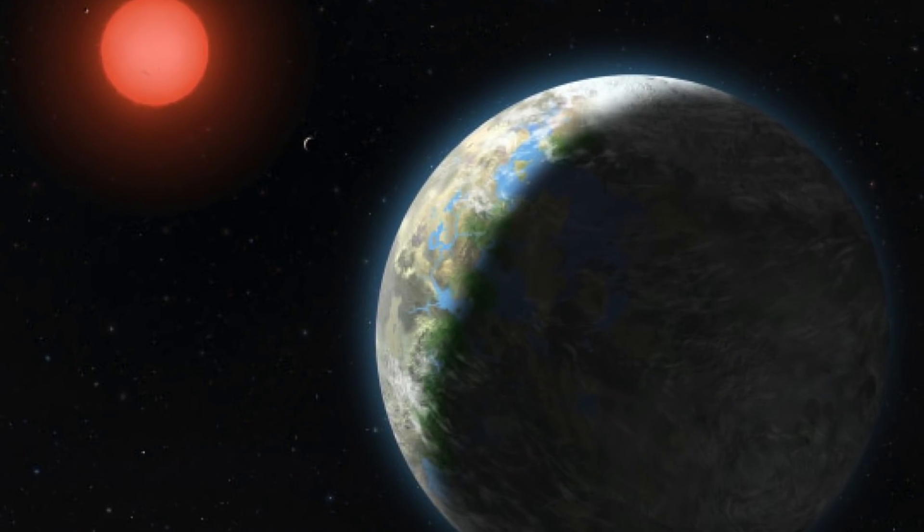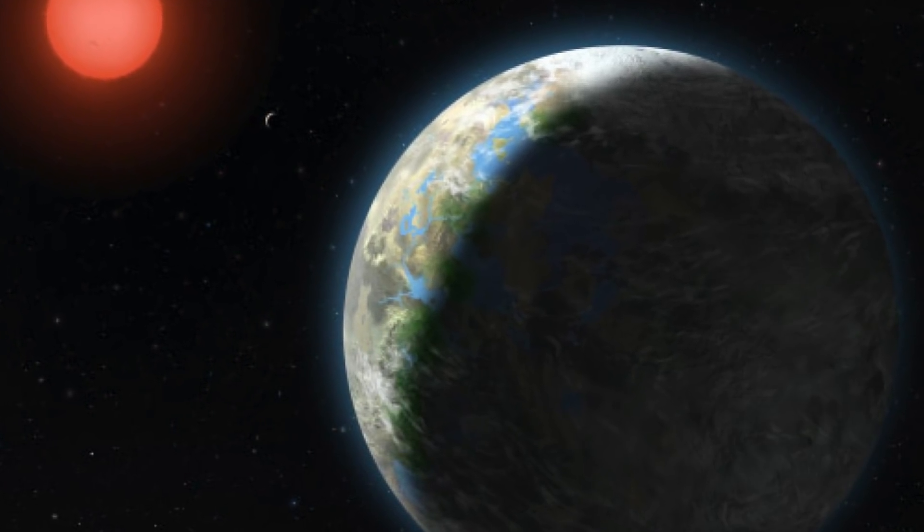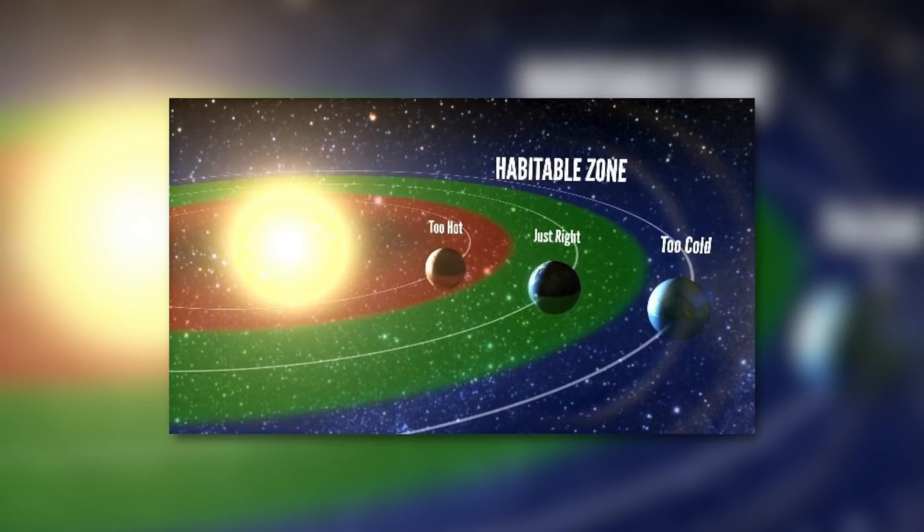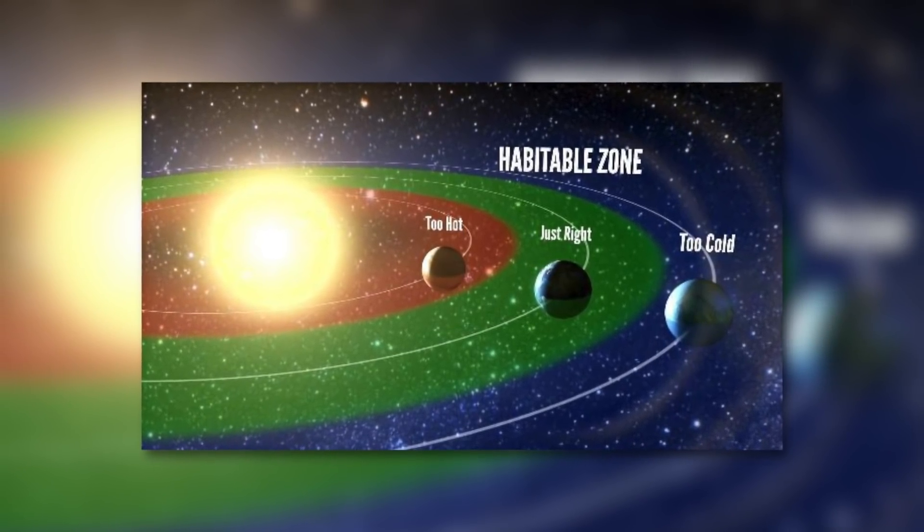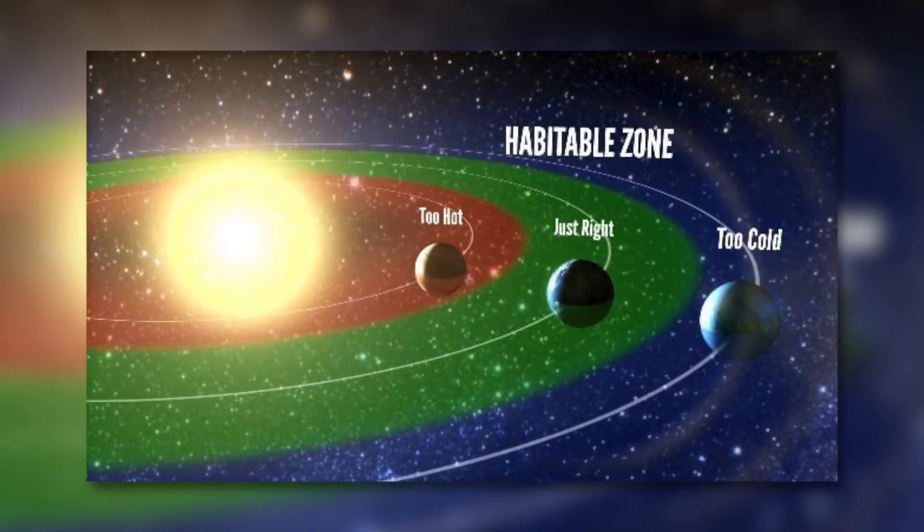One of these celestial bodies, Gliese 581g, was to attract the special attention of space scientists. The terrestrial planet moves around its galactic fixed point within that distance range defined in the world of astronomy as the habitable zone.